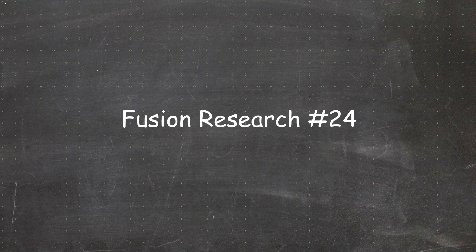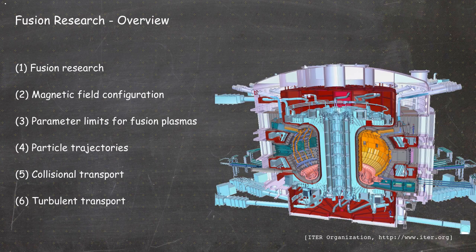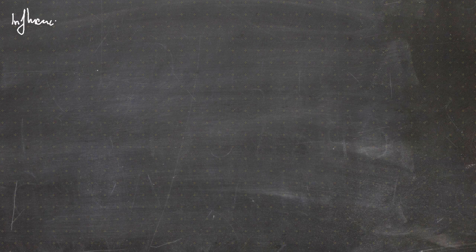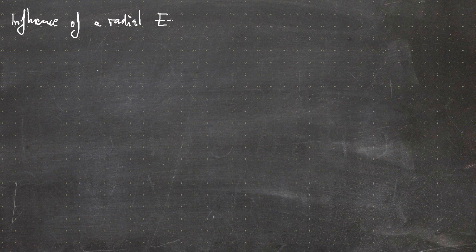Hello everybody and welcome to video number 24 of the online version of the fusion research lecture. We are in chapter 4: particle trajectories. In the last video we talked about particle trajectories in a stellarator field, and in this video we will talk about the influence of a radial electric field on the trajectories both in tokamak and stellarator.